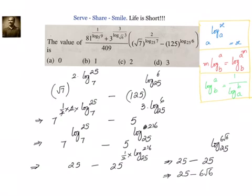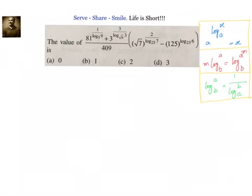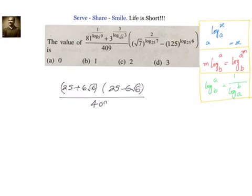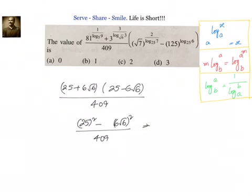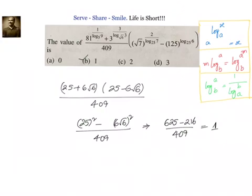Now we got the first part as 25 + 6√6 and the second part as 25 − 6√6. Let's multiply them and divide by 409. We write: (25 + 6√6)(25 − 6√6) divided by 409. Using (a + b)(a − b) = a² − b², we get 25² − (6√6)² divided by 409, which simplifies to (625 − 216) ÷ 409 = 409 ÷ 409 = 1. So the answer is option B, which is equal to 1.